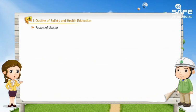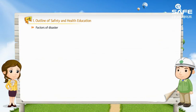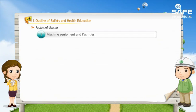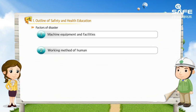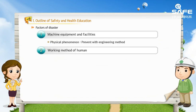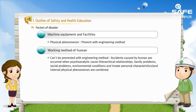Disasters cause unhappiness against the unwanted will of a human being, and when we analyze the factors, they can be divided into two. First, when machinery and equipment act as one factor. Second, when human work behavior acts as another. The physical phenomena on the physical side can be prevented by an engineering method, but the prevention of human-caused disasters cannot be achieved by engineering methods alone.